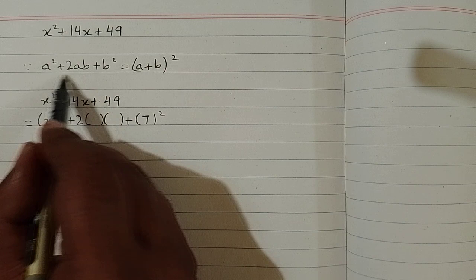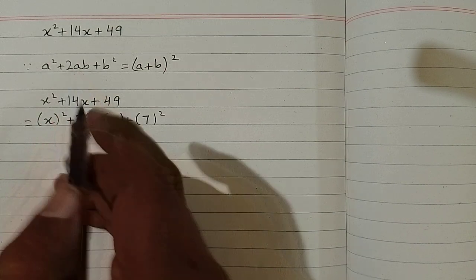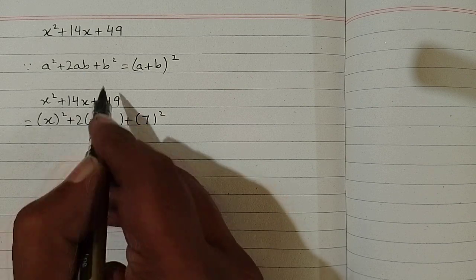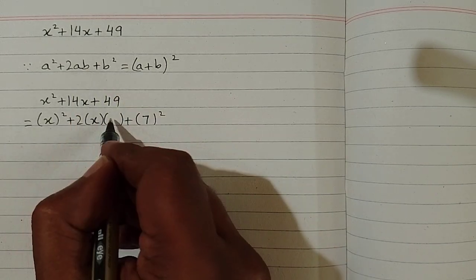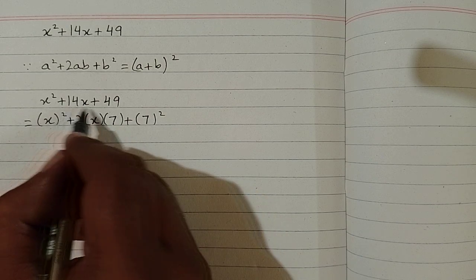Now we have 2ab in the middle. So we can write x in place of this a and 7 in place of b. Now 2 times x times 7 is 14x.